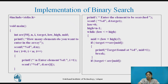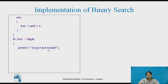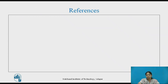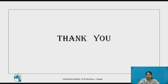Else, if the target is less than A[mid], we adjust high to mid minus 1. Otherwise, the target is greater than A[mid], so we set low to mid plus 1. After exiting the while loop, if low is greater than high, we display that the target element is not present in the array. This completes the implementation of binary search using C programming. These are my references. Thank you.